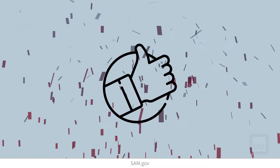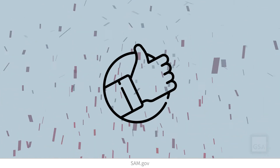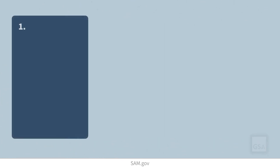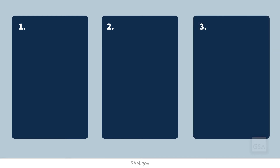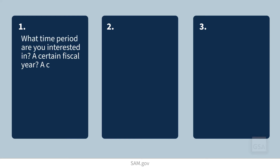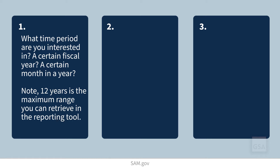So, if you've decided that an ad hoc report is what you need, let's go over what information you should have in order to successfully build your ad hoc report. Building an ad hoc report without a clear idea of what data you are trying to see will be difficult. That's why we recommend you gather the answers to these three questions before you begin. One, what time period are you interested in? A certain fiscal year? A certain month in a year? As a side note, be aware that 12 years is the maximum range you can retrieve in the reporting tool.